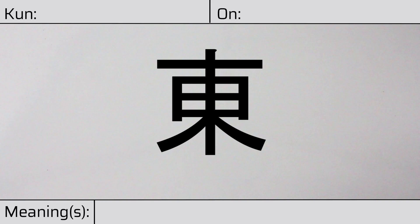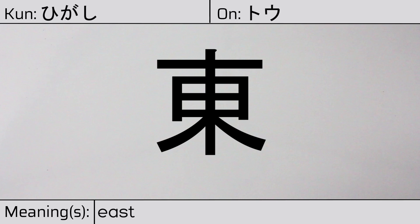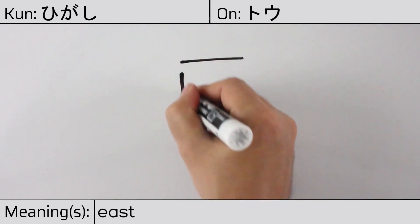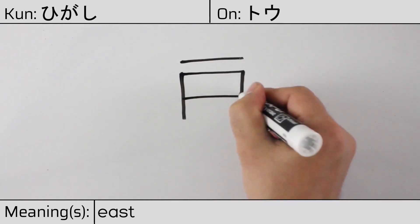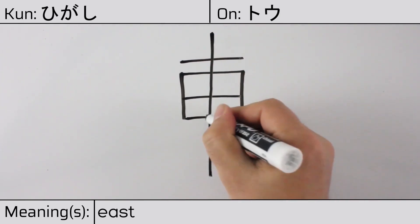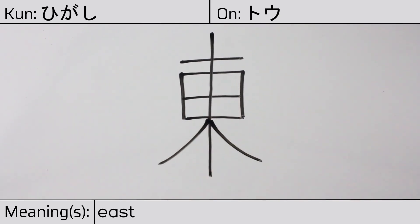Welcome to this lesson on Japanese kanji. Today, we'll be discussing this character. This kanji has a kunyomi or Japanese reading of higashi, and it has an onyomi or Chinese reading of tou. This character has the meaning east. Here is the stroke order.